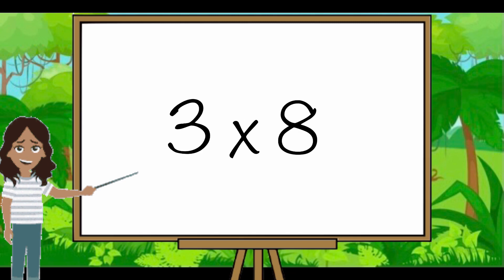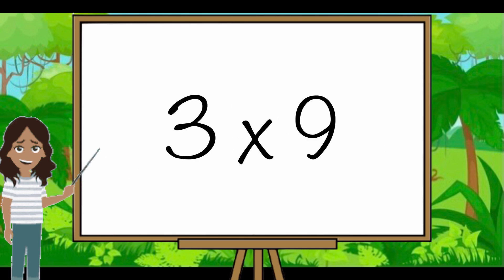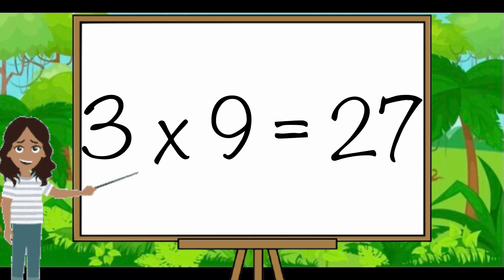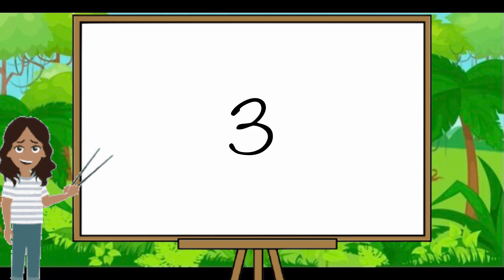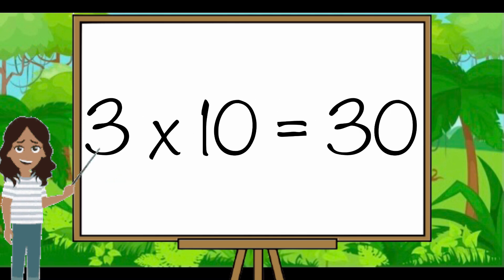Three eights are twenty-four. Three nines are twenty-seven. Three tens are thirty.